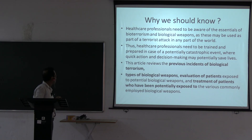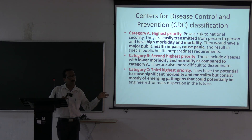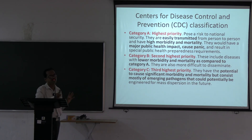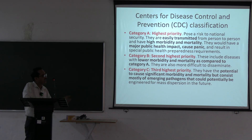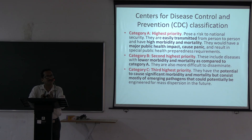Topics to know include previous instances of biological terrorism, types of biological weapons, evaluation of patients, and how to suspect and treat patients who have been potentially exposed. The CDC classification of biological weapons — Categories A, B, and C — is very important and can appear as short notes.